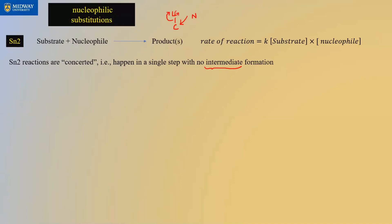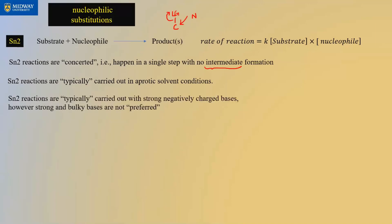This will make even more sense when we compare SN2 and SN1, because they are essentially the opposite of each other in many ways. SN2 reactions happen in a single step with no intermediate formation, and they are typically carried out in aprotic solvents. Remember, there are two types of solvents: protic and aprotic. Aprotic usually refers to nonpolar solvents.